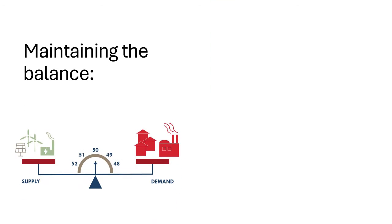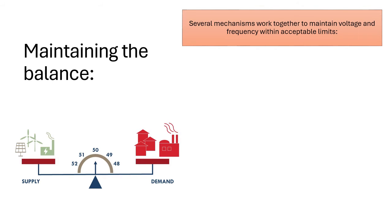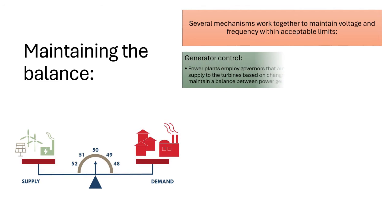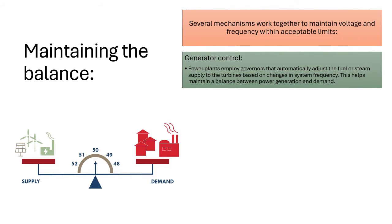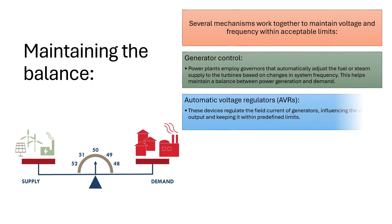Maintaining the balance: several mechanisms work together to maintain voltage and frequency within acceptable limits. Generator control: power plants employ governors that automatically adjust the fuel or steam supply to the turbines based on changes in system frequency. This helps maintain a balance between power generation and demand.